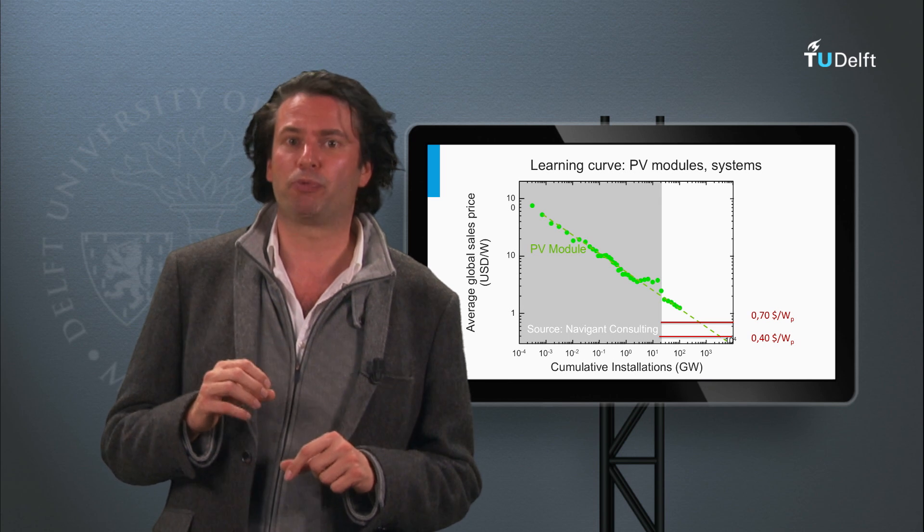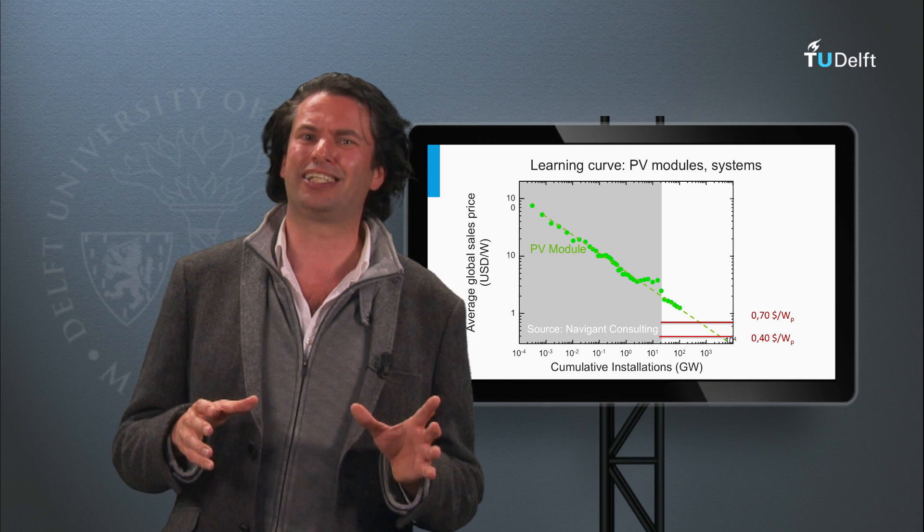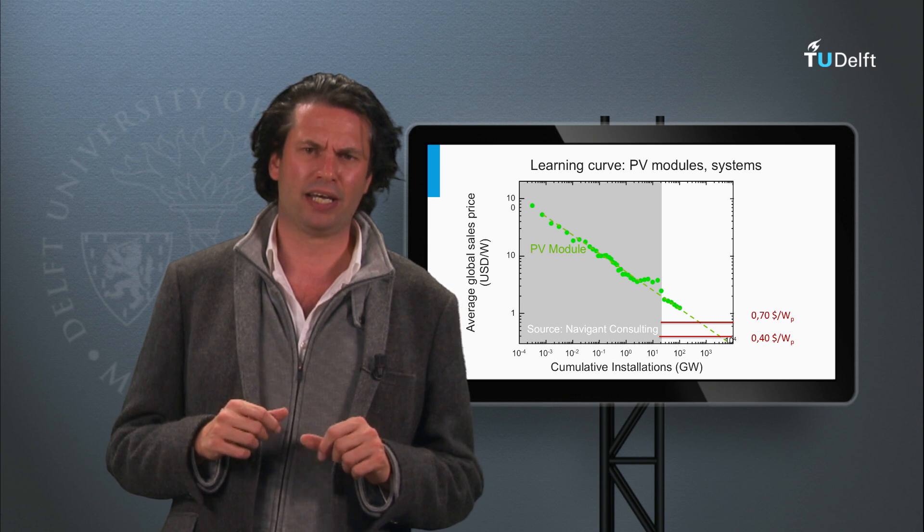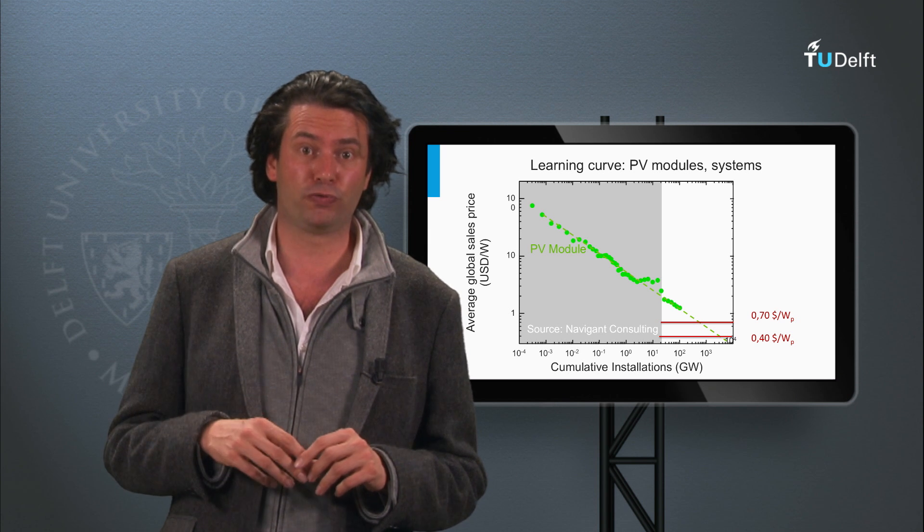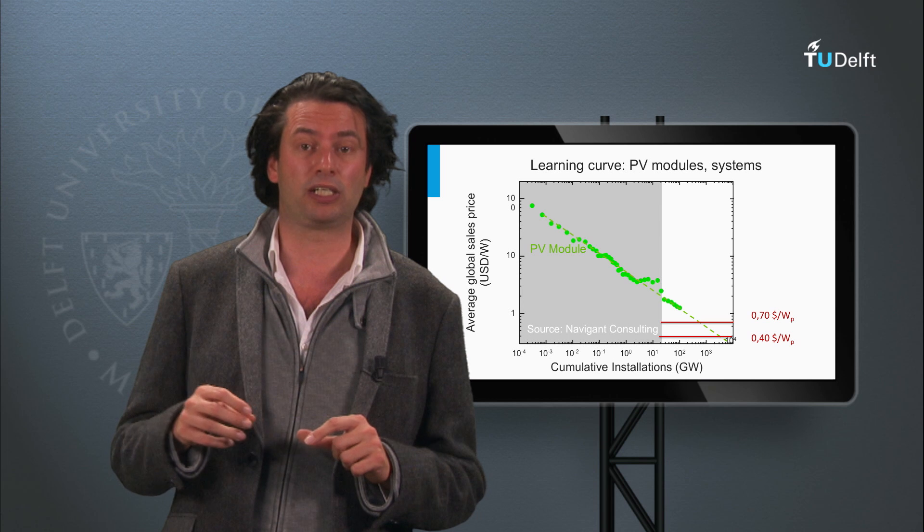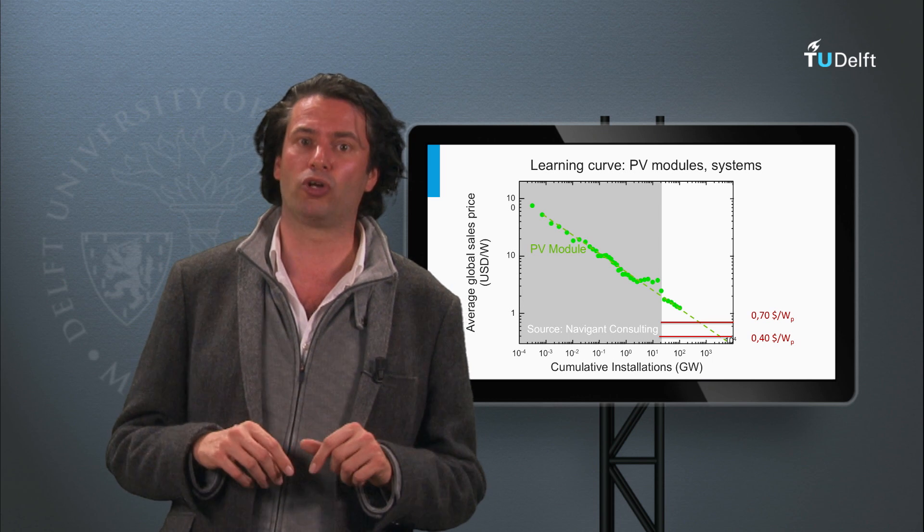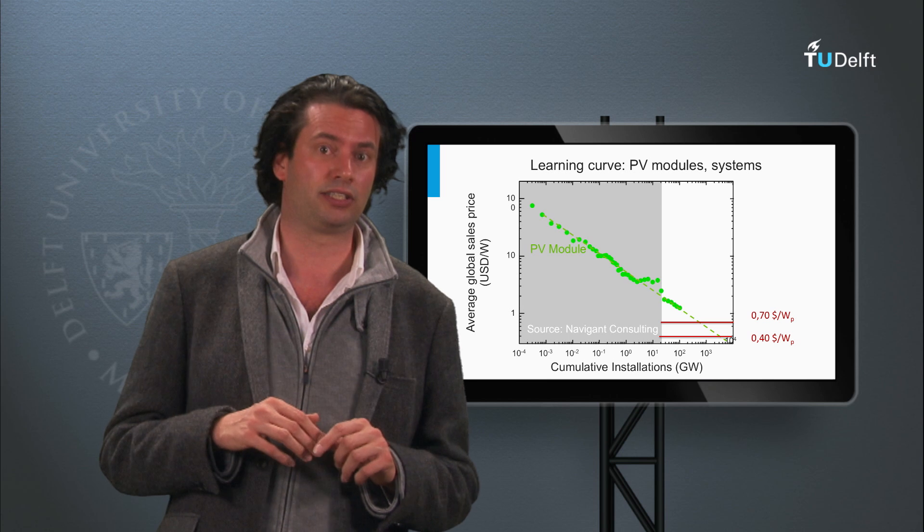The current cost price per watt peak of the First Solar products is in the order of 68 to 70 dollar cents per watt peak and is expected to drop to 40 dollar cents per watt peak in the future, keeping the cost price per watt peak lower than the solar modules based on crystalline silicon wafers.